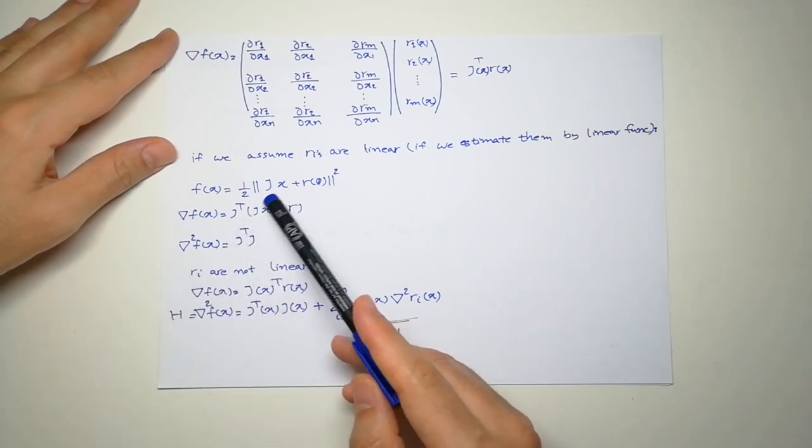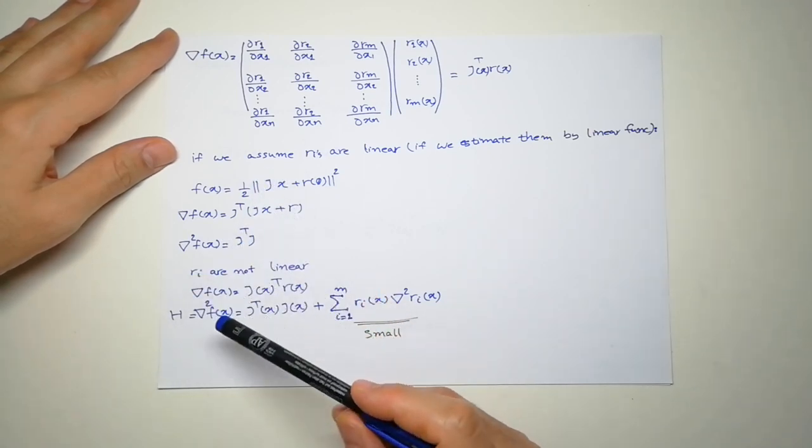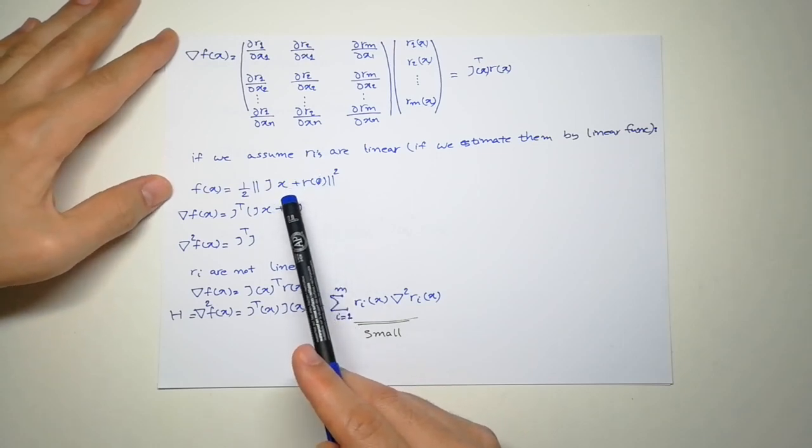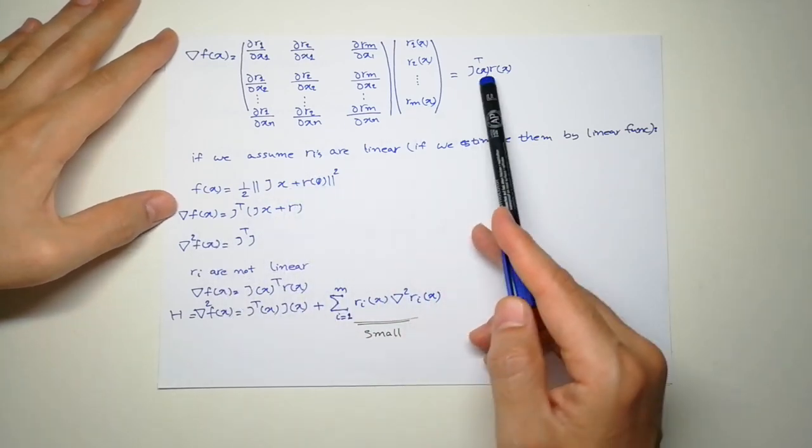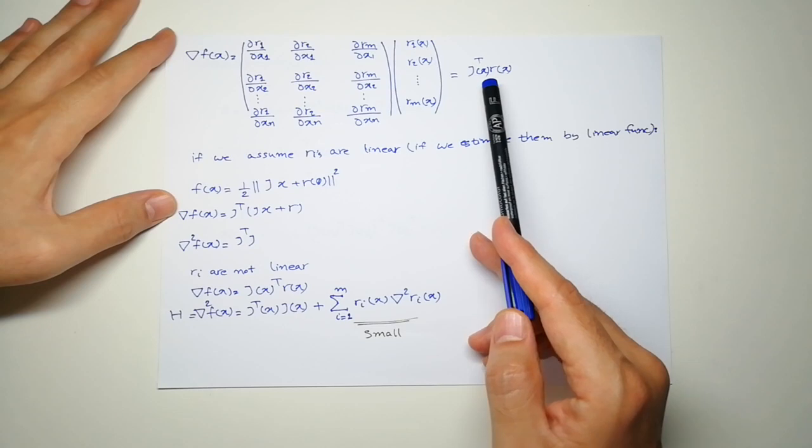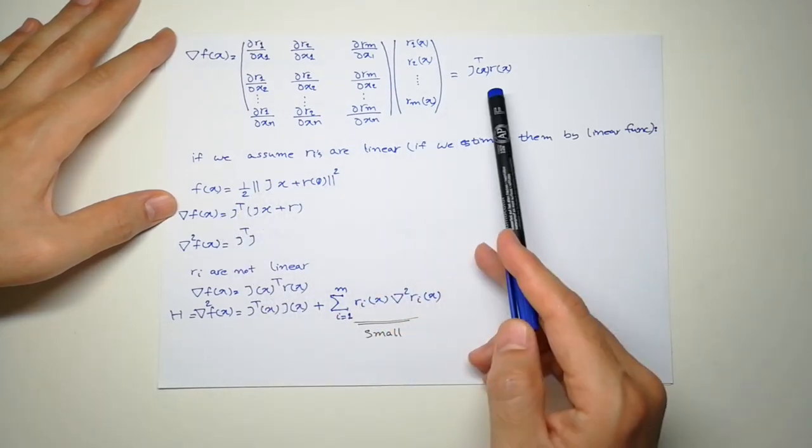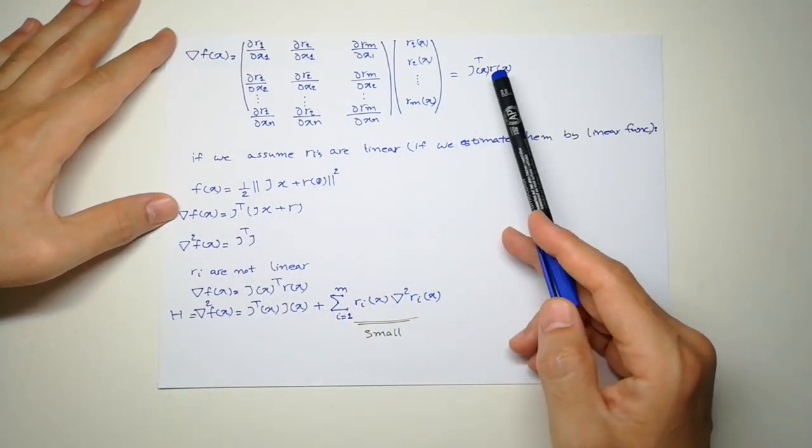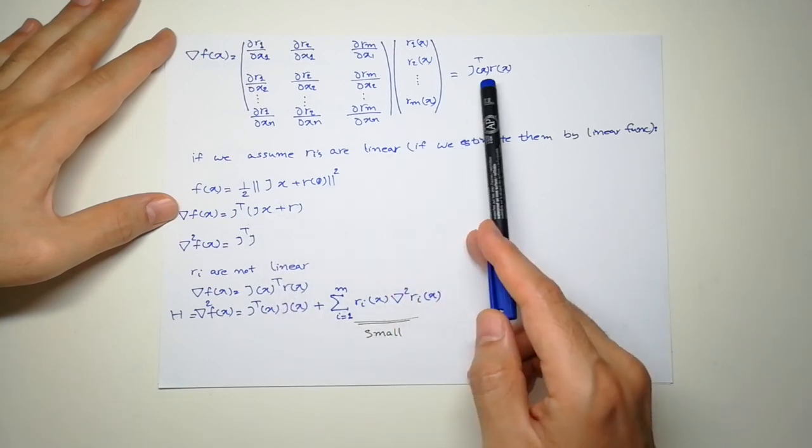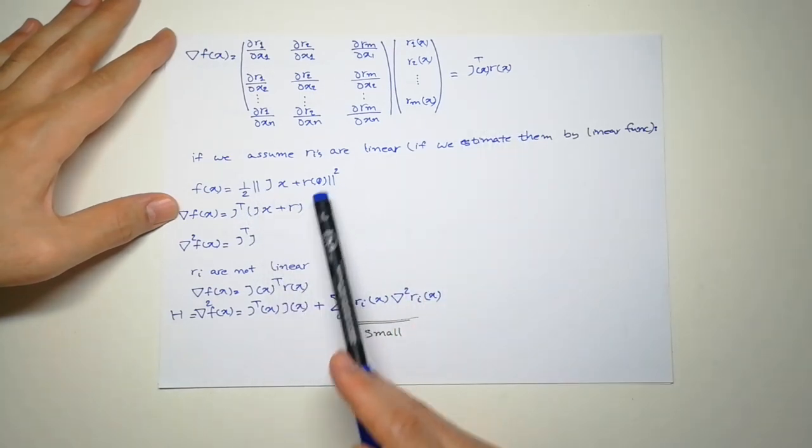So the derivative, the gradient, is going to be J transpose multiplied by R, which is this.